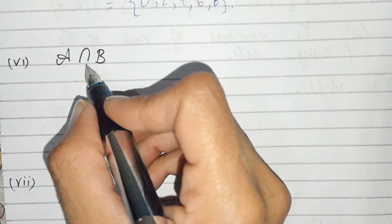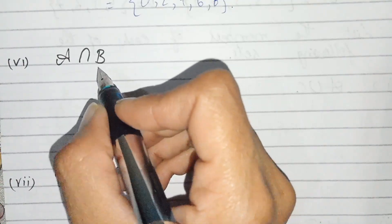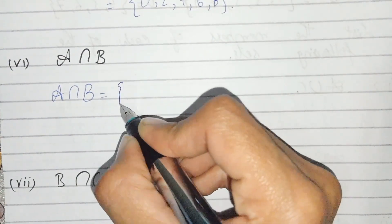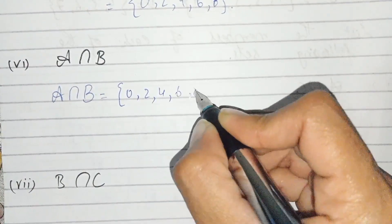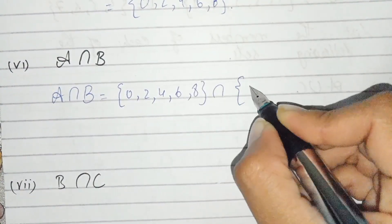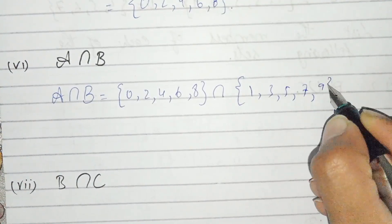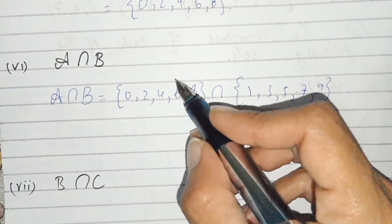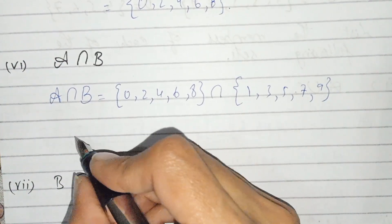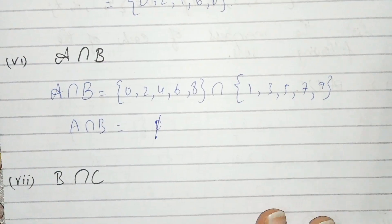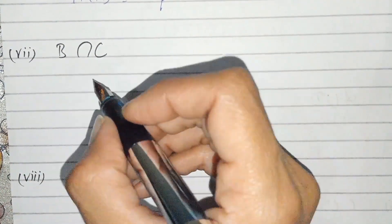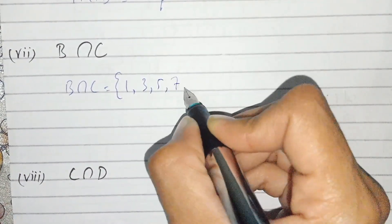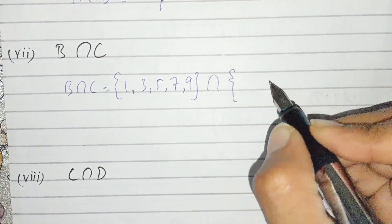Part number six: intersection. This sign means intersection, and intersection means to take the common elements. A intersection B: A is {0,2,4,6,8} and B is {1,3,5,7,9}. There are no common values — these are even numbers and those are odd numbers — so A intersection B is the empty set.